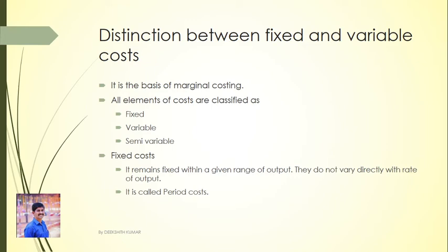Fixed costs remain fixed within a given range of output; they depend mainly upon the passage of time and do not vary directly with the rate of output. They are called period costs. Some examples are management expenses, rent, rates, and insurance.